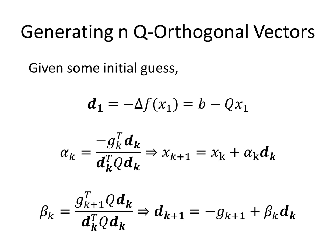Given some initial guess x1, we can calculate the first orthogonal vector as the negative gradient evaluated at this initial guess. We can then calculate the value for alpha and use that to update our guess. We can then calculate beta and use that to update the value of the orthogonal vector. If we do this iteratively, we end up with a final value of x that is close to our optimal solution.